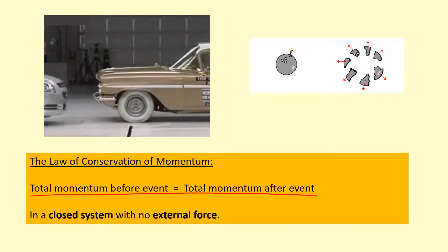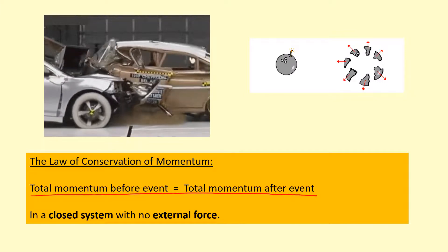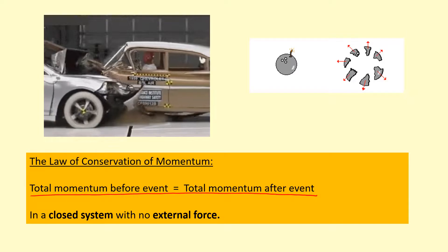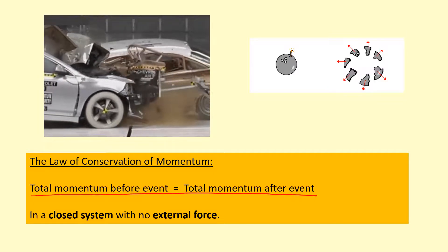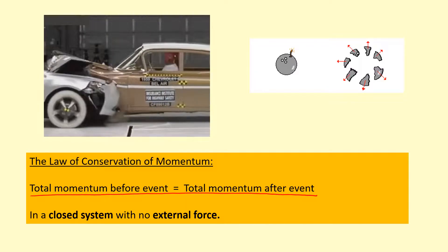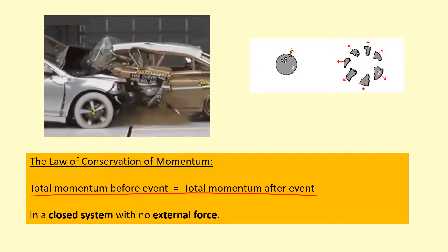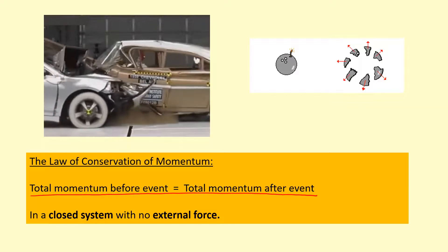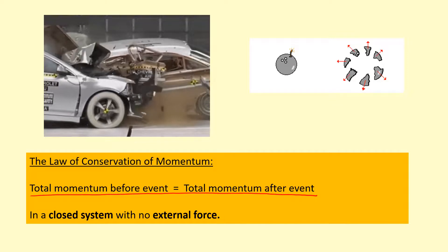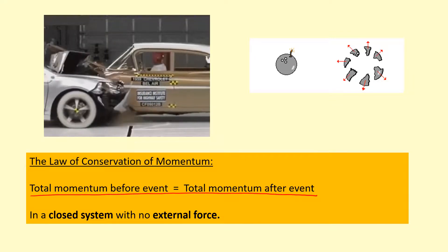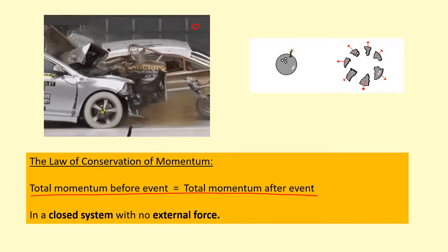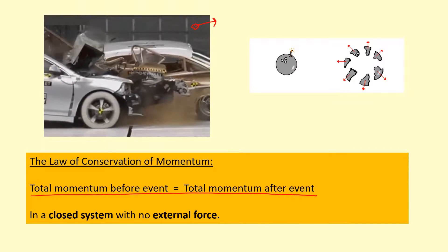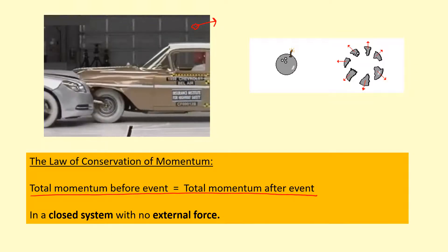What do I mean by a closed system? That means that there's nothing entering the system or leaving the system. For example, these two cars — if you consider the total momentum of them before and add them together, it will equal the total momentum after, with all the debris flying off, if you count the momentum of every single debris and particle. If you've got a debris that's flying away and you don't count that, then the total momentum before won't equal the total momentum afterwards. You need to count all of the particles.